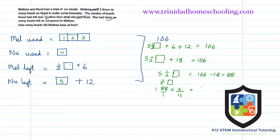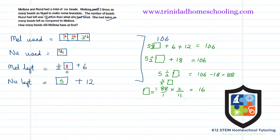88 divided by 11 over 2 gives us 16. So one of these boxes represents 16 beads. Each full share is 16 beads, and the half share — which is half of 16 — is 8 beads.